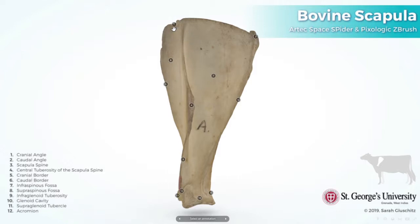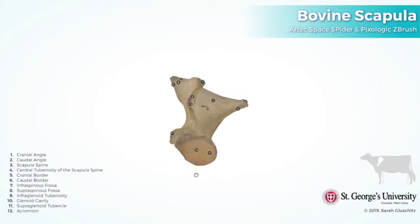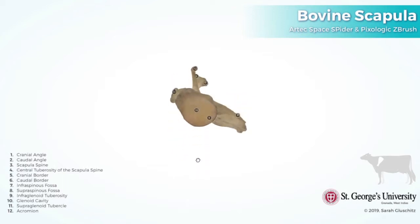Angles: there are three angles in the scapula bone. The cranial angle, which is facing toward the head; the caudal angle, which is facing toward the tail; and the ventral angle, which is facing toward the body. The ventral angle is also known as the glenoid angle because it bears the glenoid cavity.